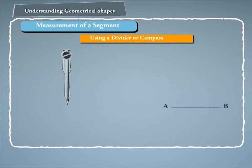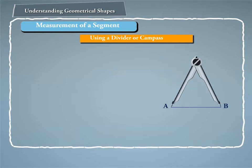Using a divider or a compass: Open the divider such that the point of one arm is at A and the second exactly at B. That is, the segment AB is contained in the divider.